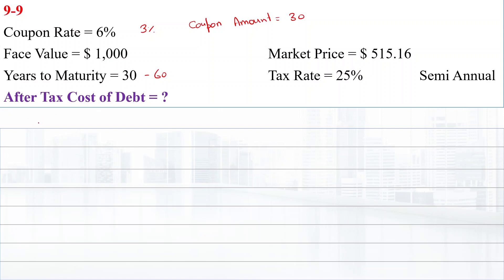We can use this formula: Present value equals cash flow times [1 over i minus 1 over i times (1 plus i) raised to power n] plus face value divided by (1 plus i) raised to power n.